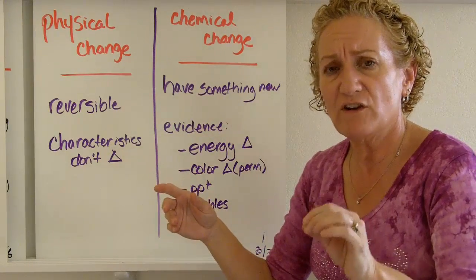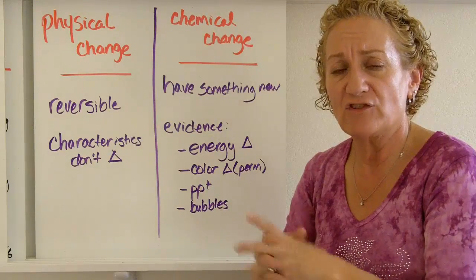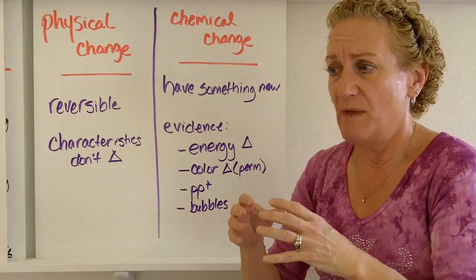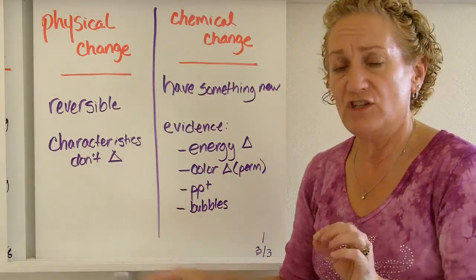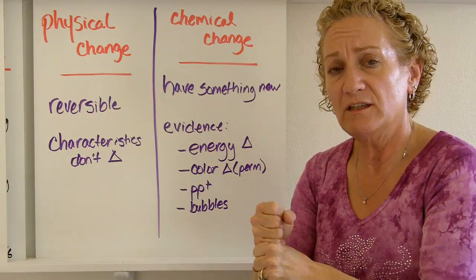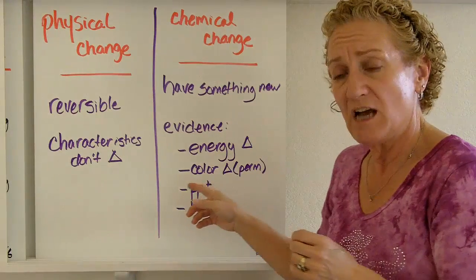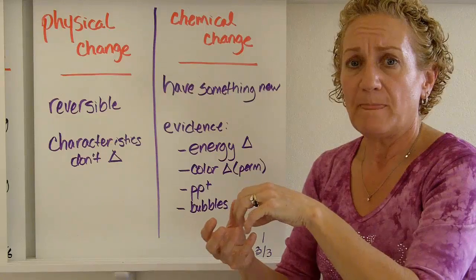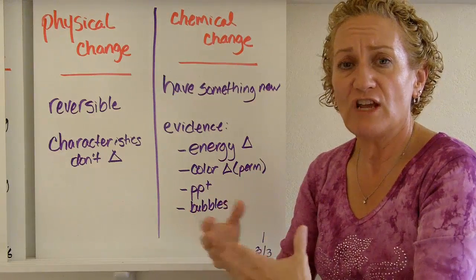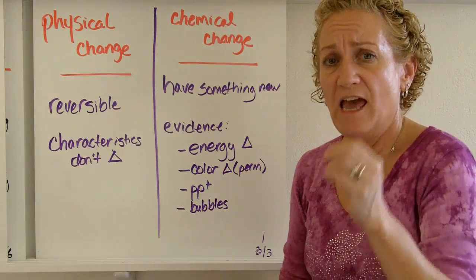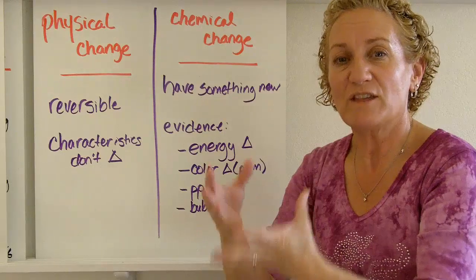Chemical reactions are very difficult or impossible to reverse. So how do you know a chemical reaction has occurred? There are several signs. First, energy change — something could get hot or cold, or give off light. Second, a permanent color change — it starts out yellow and ends up black and doesn't go back to yellow. Third, a precipitate forms — PPT stands for precipitate — where you take two liquids, put them together, and get a solid out of it.